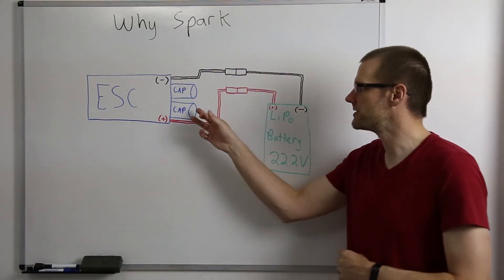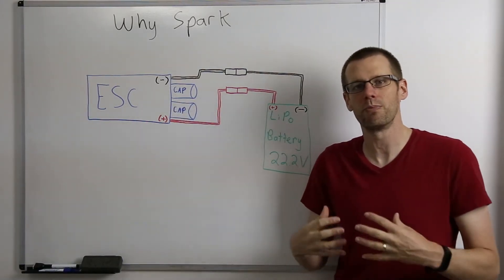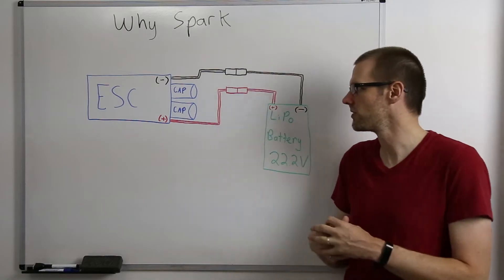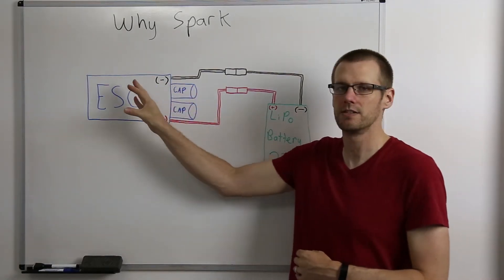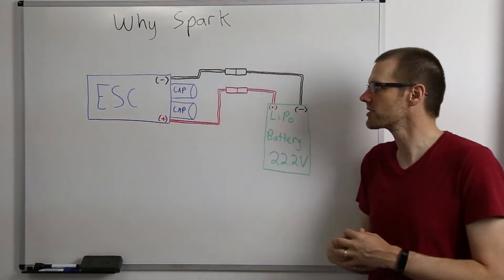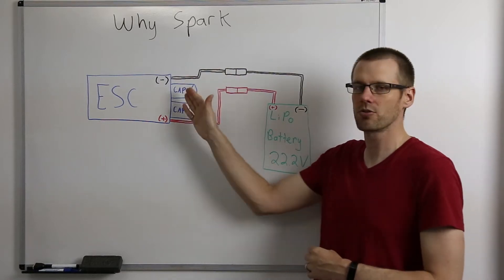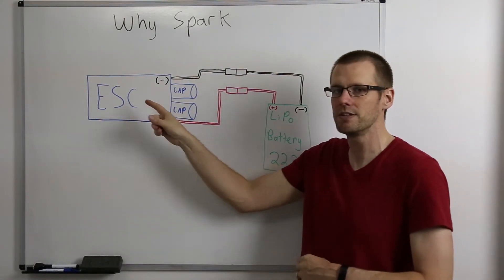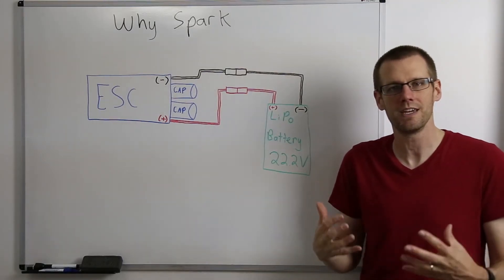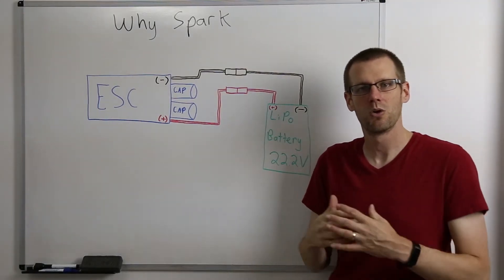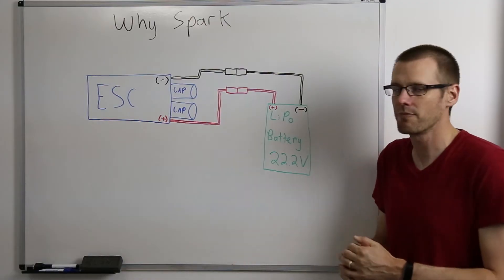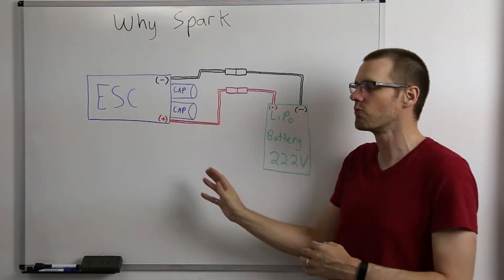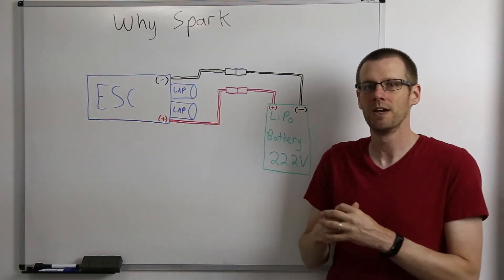Capacitors on our electronic speed control is definitely one of the most important components for our speed control in order to protect the ESC. What they do is they actually smooth out the voltage across our negative and positive leads so that they don't destroy the FETs, which are a component that's inside our electronic speed control. We are not going to be worrying about them for today. We're only going to focus on what we see in this diagram.